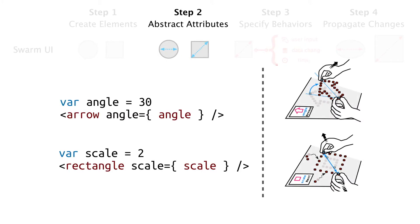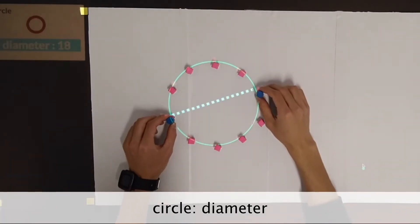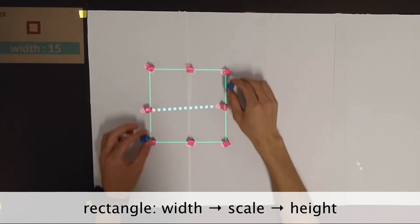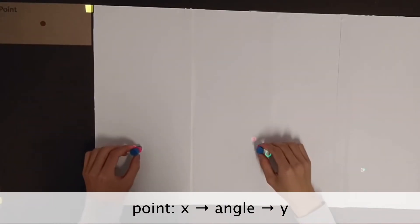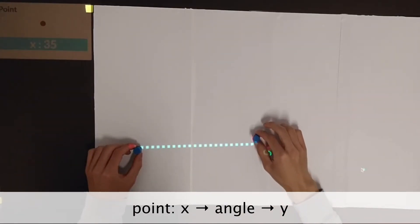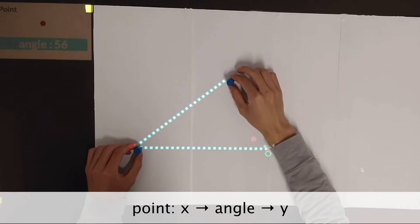The second step is to abstract attributes through demonstrations. One important aspect of programming is the ability to generalize a specific shape with abstractions. To abstract attributes, the user can simply define them through physical demonstration.